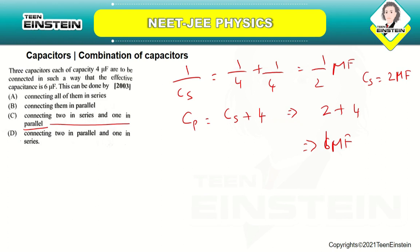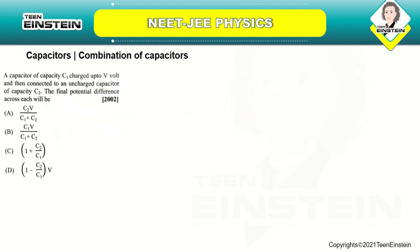It is a very simple question. Three capacitors each of capacity 4 μF are connected so the effective capacitance is 6 μF. Connecting 2 capacitors in series gives 2 μF, and connecting the third in parallel gives a total effective capacitance of 6 μF. The correct answer is option C: connect 2 in series and 1 in parallel.